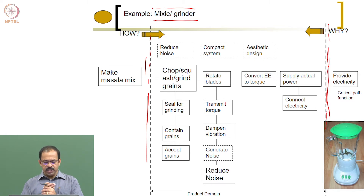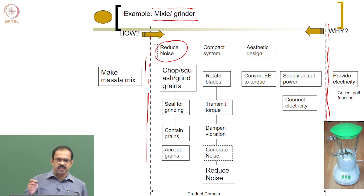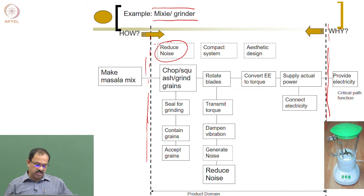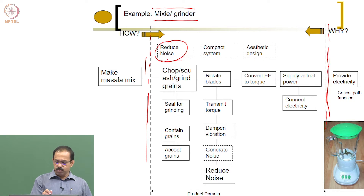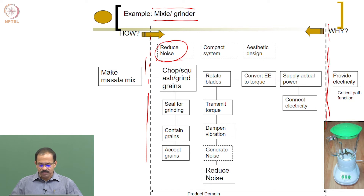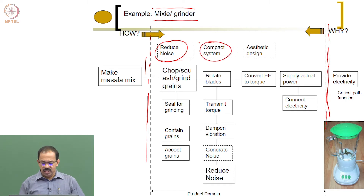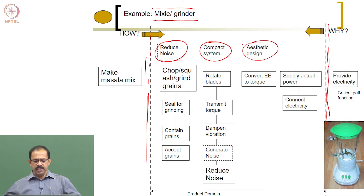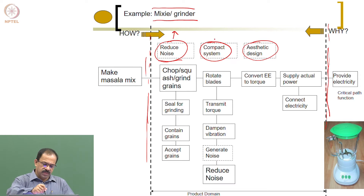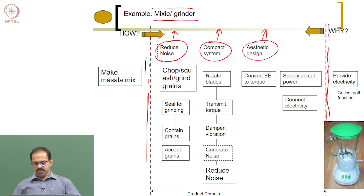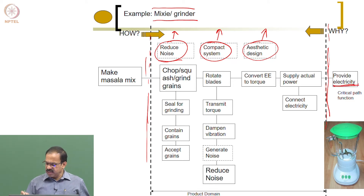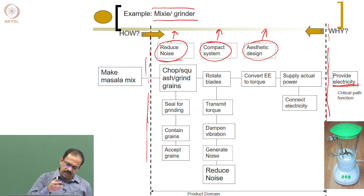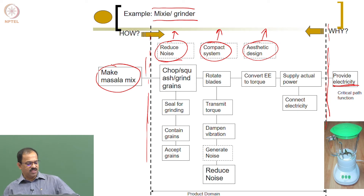The project objective is reduced noise. A one-time objective is that the product should be compact for transportation. An all-time requirement is aesthetic design — it should be appealing to the user. The assumed input is electricity and the output is masala mix. We ask: how do we make masala mix?